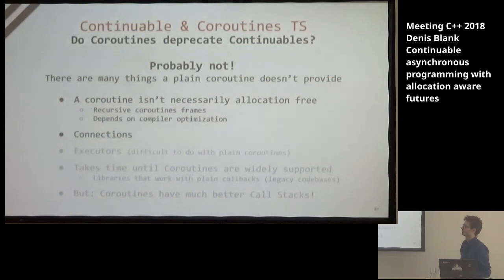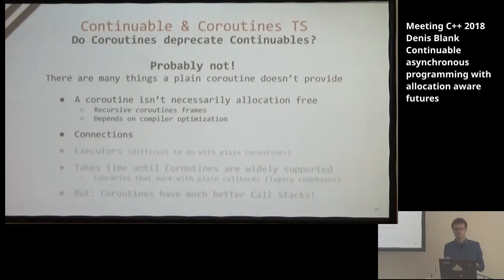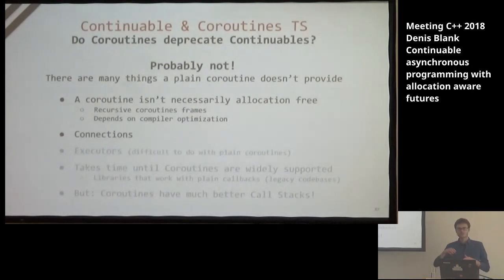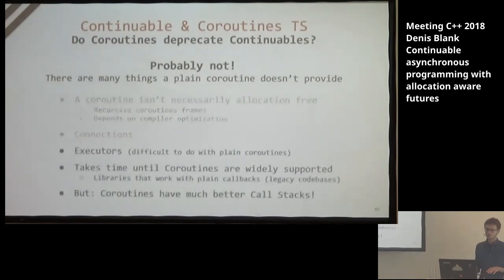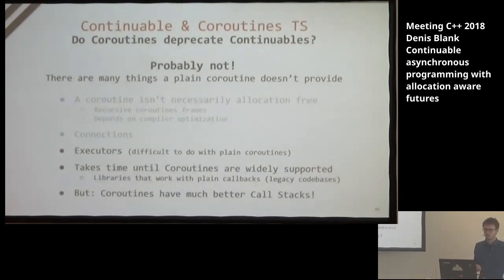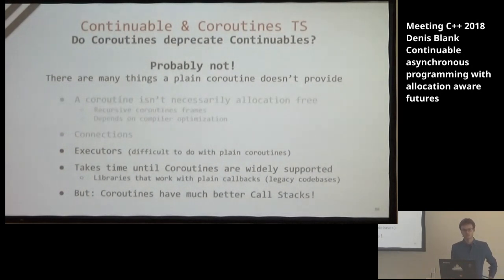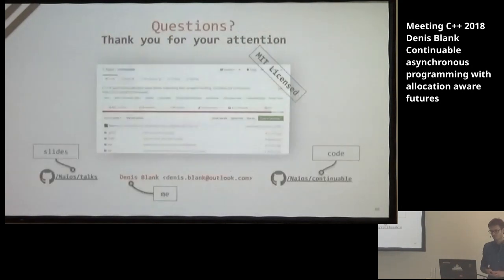The last question: do we even need Continuable in times of coroutines? There are many things a plain coroutine can't provide. A coroutine isn't necessarily allocation-free — for instance, when a coroutine calls itself recursively, allocation elision also depends on compiler optimization. Connections aren't provided by the Coroutines TS because coroutines are a low-level primitive. Executors are also difficult to apply to coroutines — here Continuable has an advantage. It also takes a lot of time until coroutines are widely supported, which becomes worse in legacy code bases with libraries still using plain callbacks. That said, coroutines have much better call stacks, making them nicer for debugging.